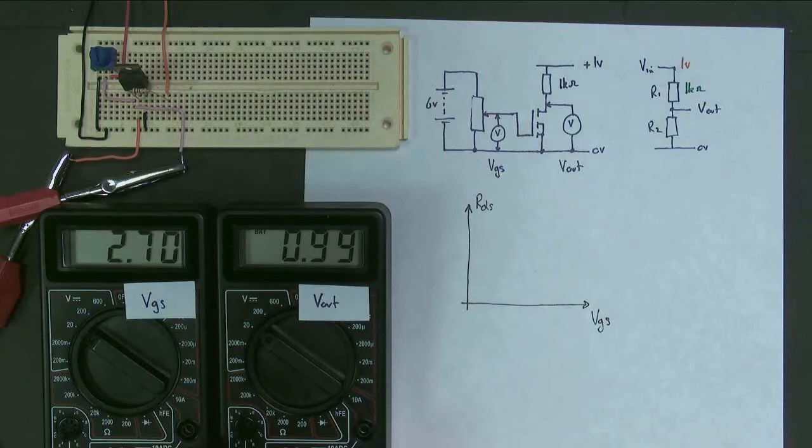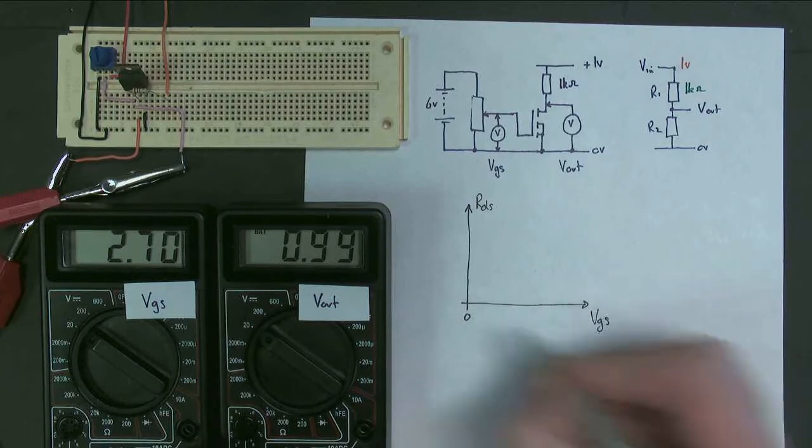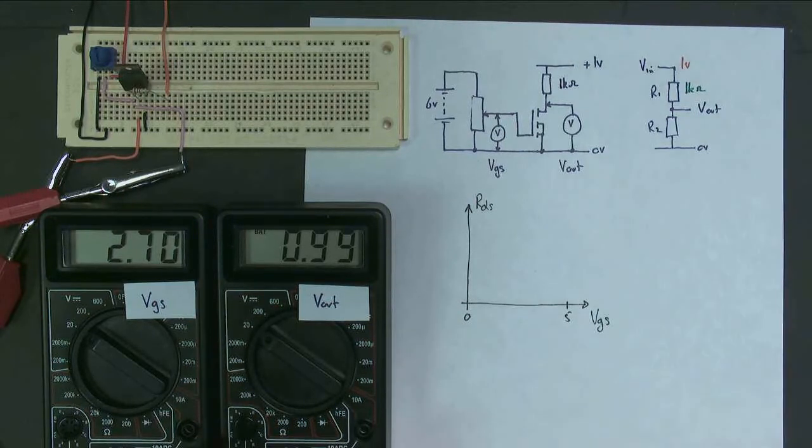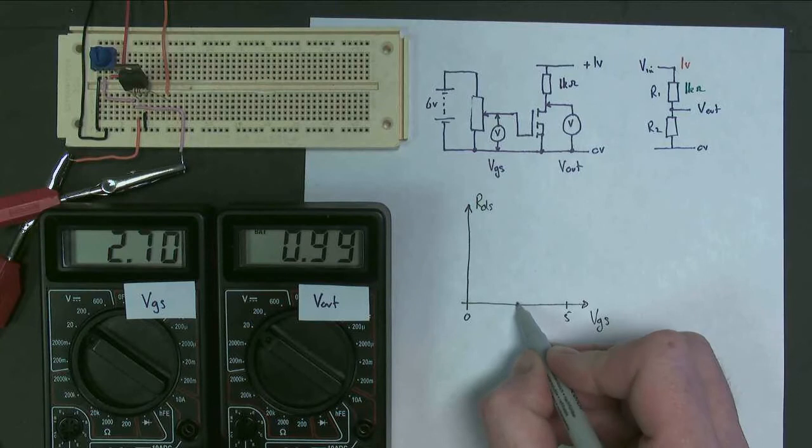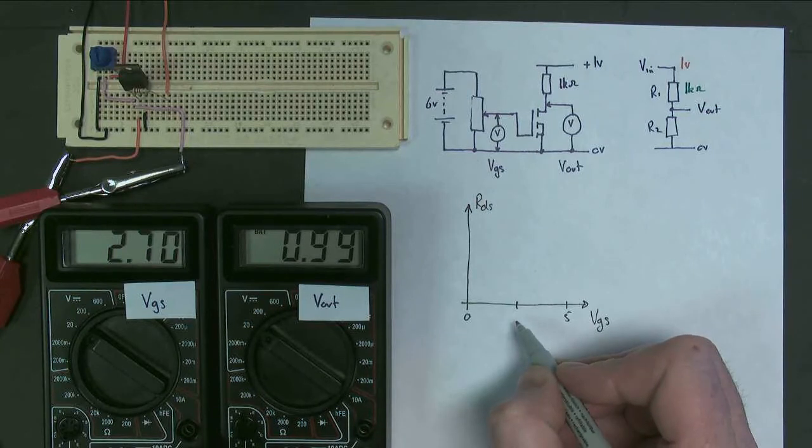So I'm going to put some scales on my axes here. This is zero. This is five, which is what we went to before. So 2.5, which is there, was still pretty infinite.